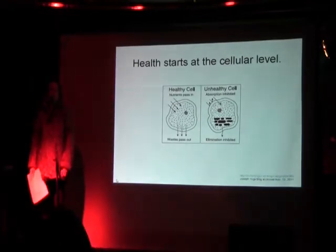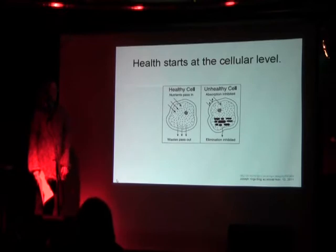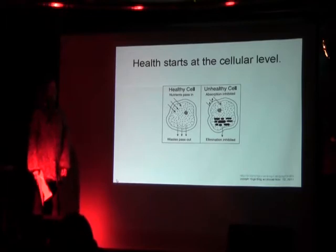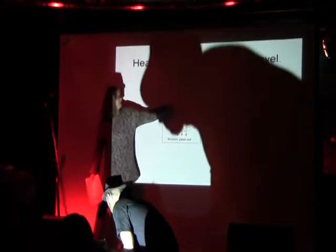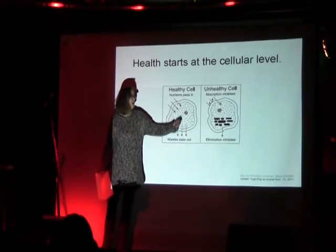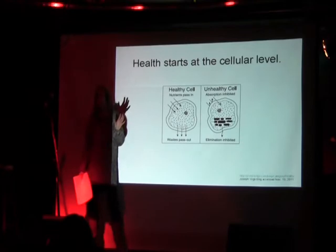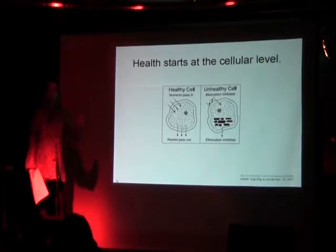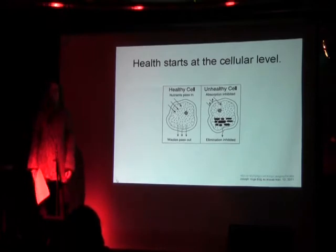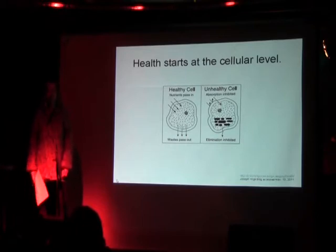Health begins at the cellular level. Here we have a very basic diagram of a healthy cell on the right and an unhealthy cell on the left. The healthy cell has a membrane surrounding it, a nucleus with its own membrane, and lots of organelles and structures that move nutrients in and out of the cell. In the unhealthy cell, when a cell isn't malleable and flexible, it's hard to get food, nourishment, and nutrients in — and the garbage out.